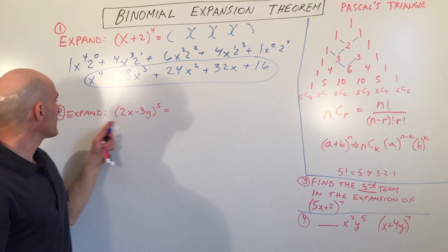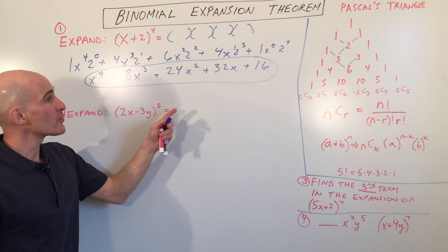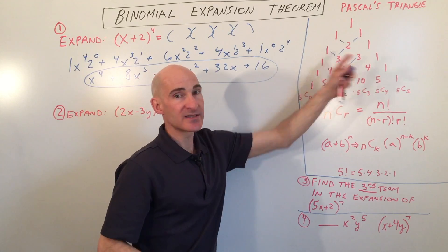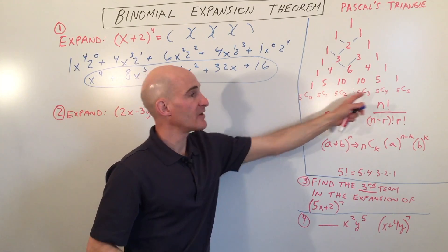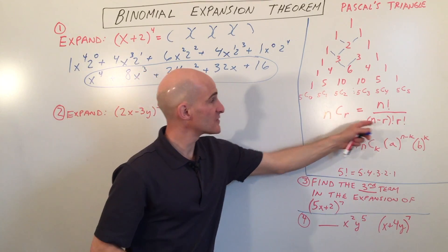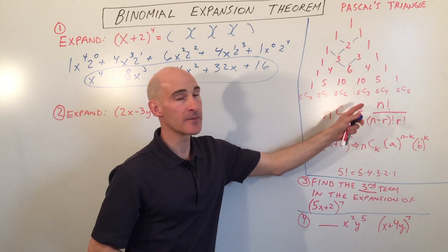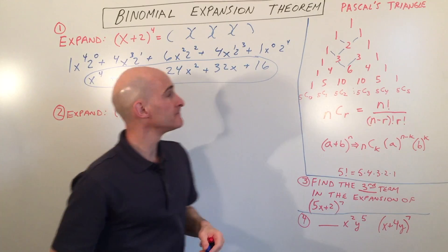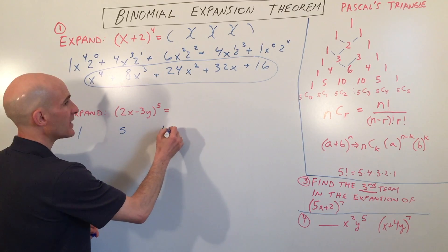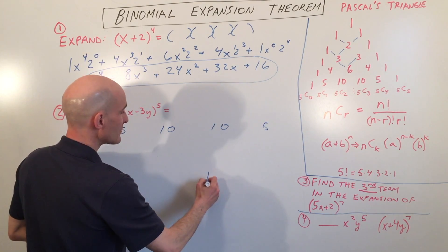So let's take a look at another example. Here we've got expand 2x minus 3y to the fifth power. So here we're going to go down to the fifth row. Now, if you don't want to do Pascal's triangle, you could always just use the combinations. You could say this is 5 choose 0, 5 choose 1. Those are going to be our coefficients. You can use this formula or you can use your calculator that has combinations on it to calculate these values. But let's go ahead and use Pascal's triangle since we have it here. So what we have is 1, 5, 10, 10, 5, and I'm running out of space. I'm going to put this one down here, 1.